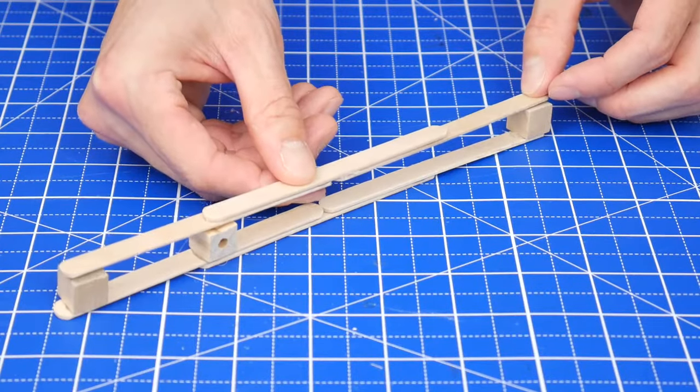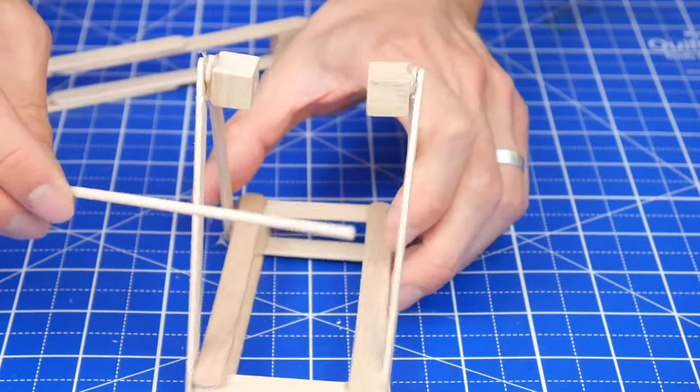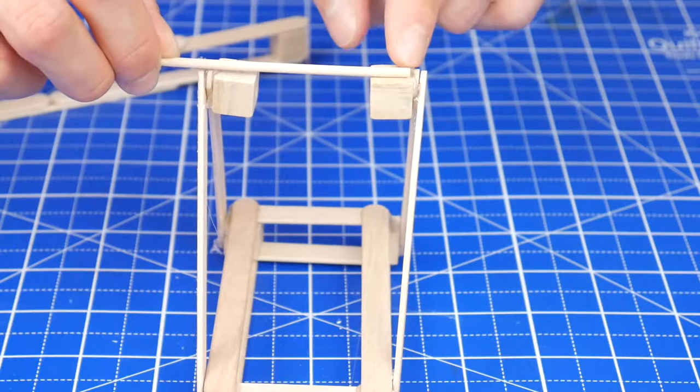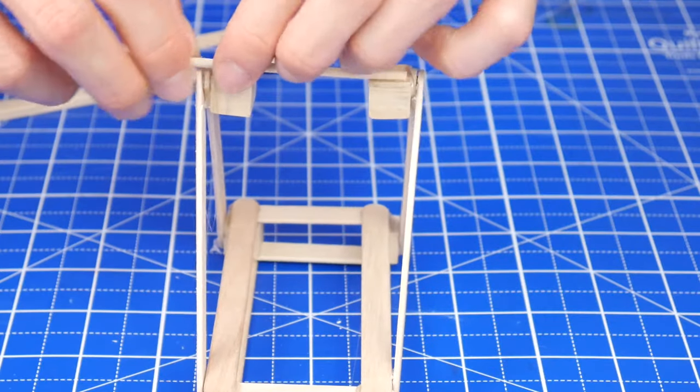Next, glue the other beam on top of those cubes. Get a dowel and estimate the length that it needs to be to fit inside these two cubes with holes at the top and then cut or break it.